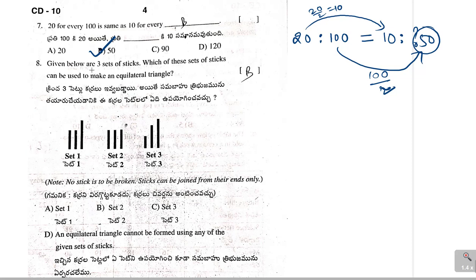Eighth problem. Given below are three sets of sticks. Which of these sets of sticks can be used to make an equilateral triangle? Equilateral triangle means all the sticks must be equal in size, in length. So, here, set 2, if you observe, all the sticks are of equal length. So, B is correct.